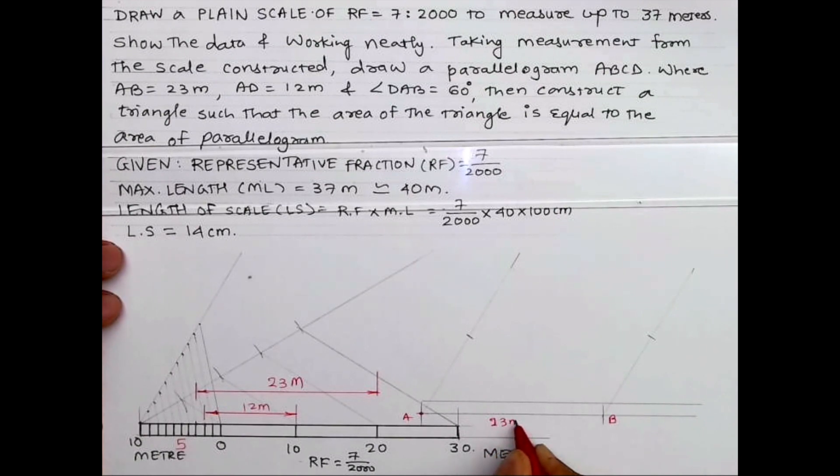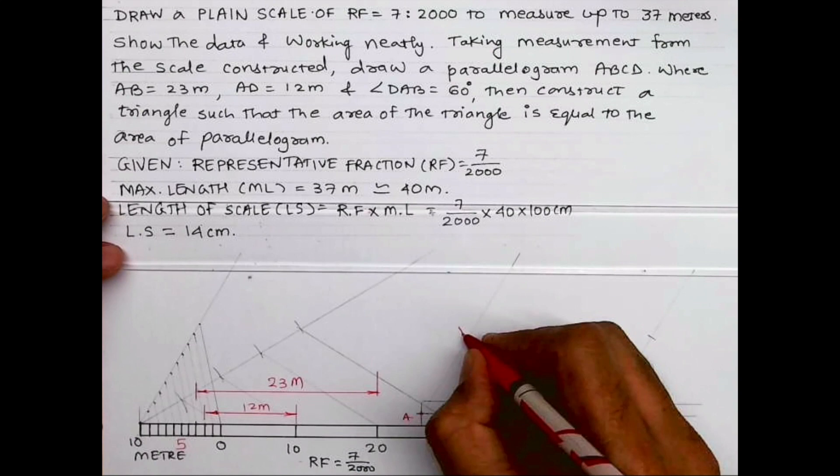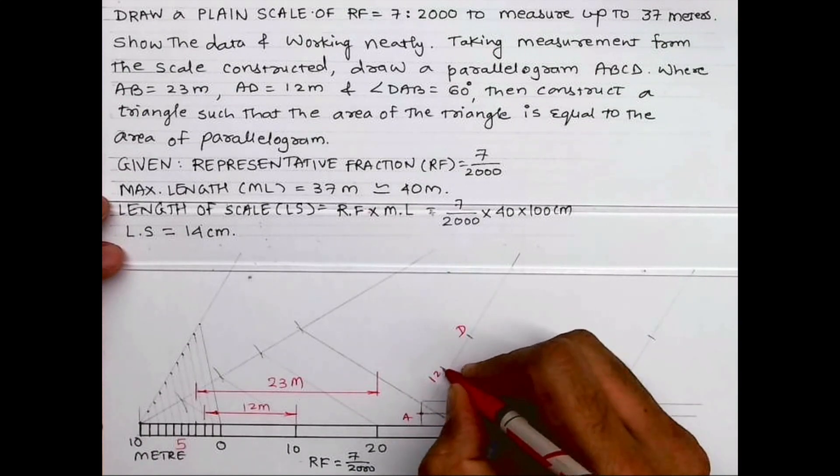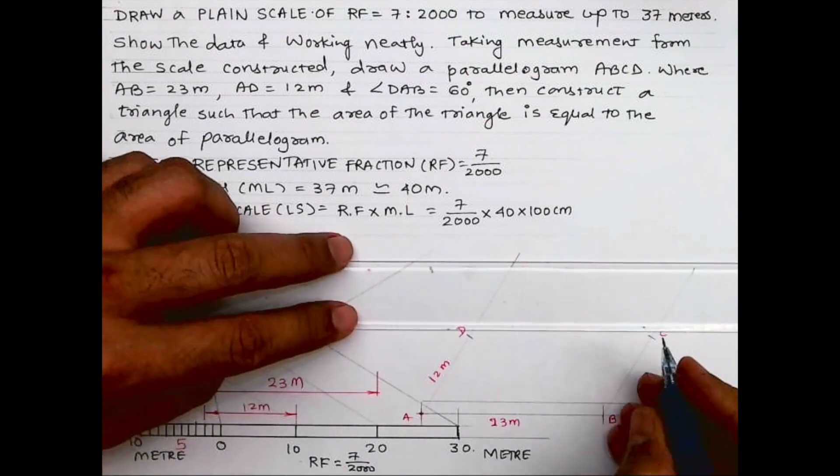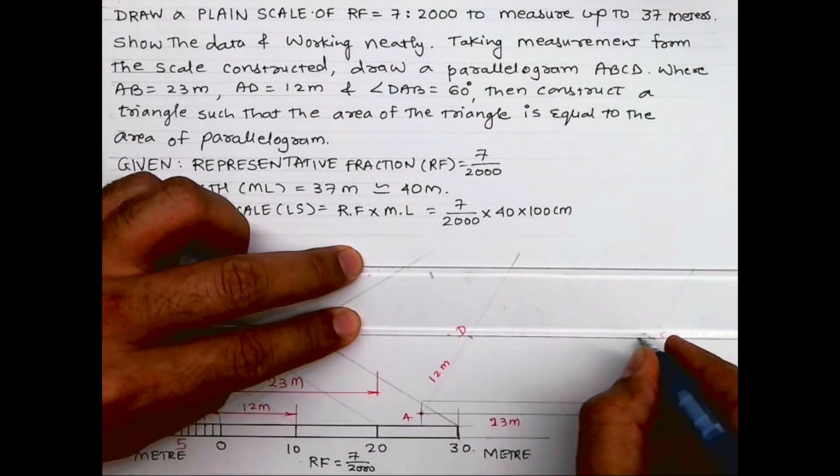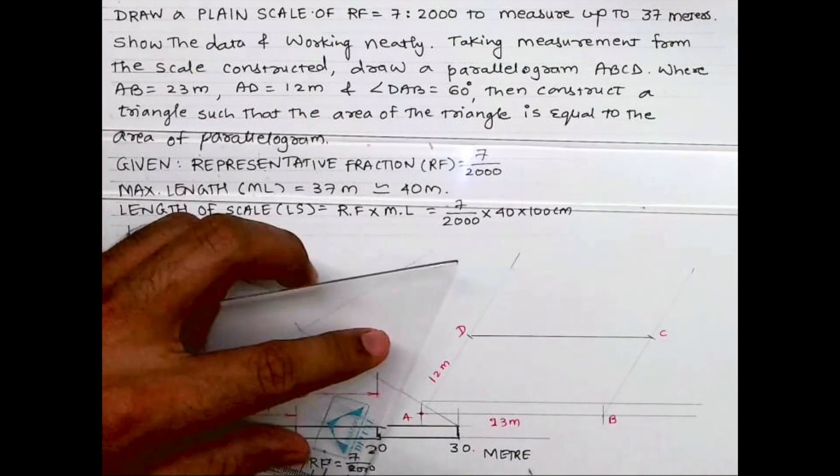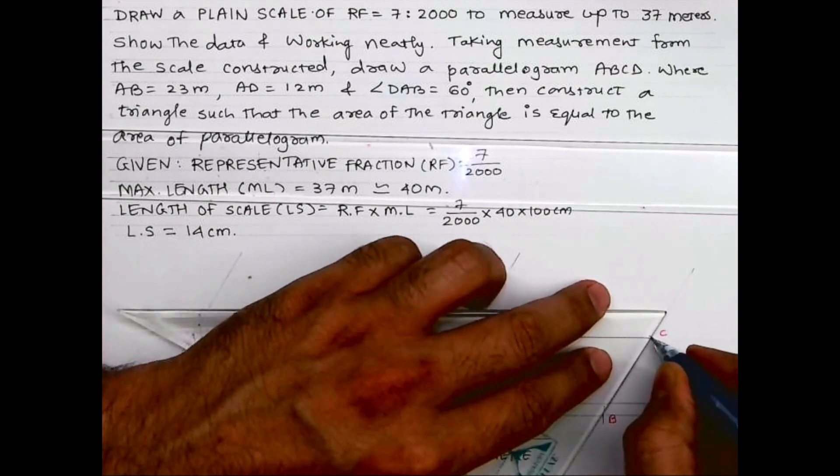This length is 23 meter and AD is 12 meter. Once we got parallelogram we need to convert this into a triangle of equal area. So what we will do?